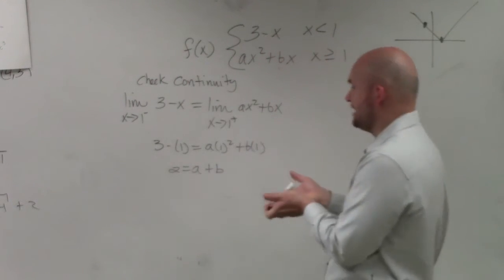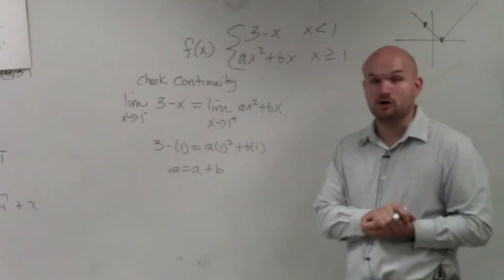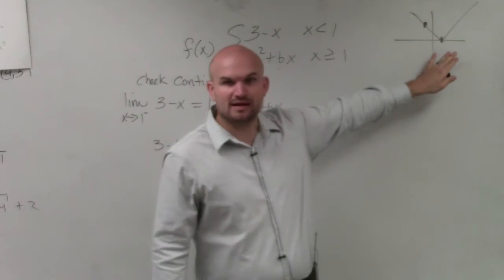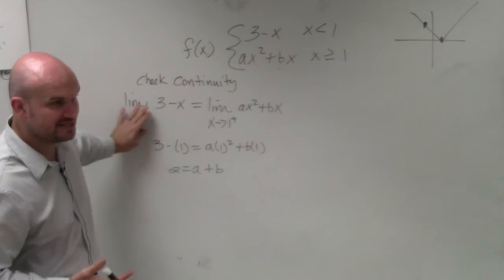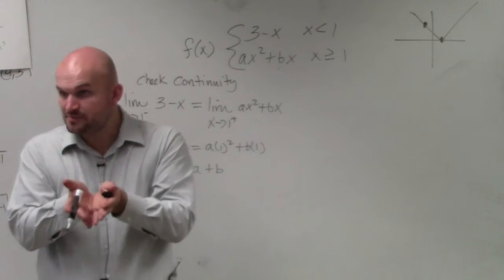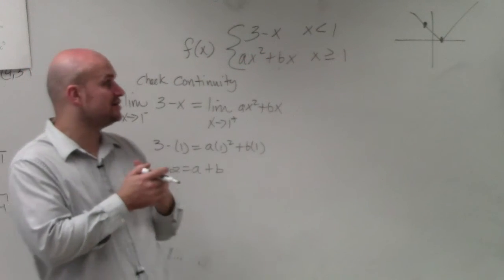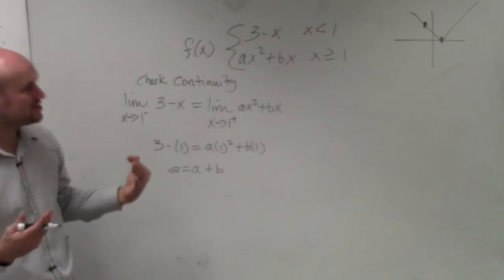So that is one equation. We know that for whatever values a and b, there's infinitely many values for a and b that the function can be continuous. But a function can be continuous and non-differentiable at a point. Remember, a function is non-differentiable not only when it's discontinuous, but if there is a cusp or if there is a corner, for instance, in this case. So we need to make sure that the left and right hand limits of the derivative are also equivalent.